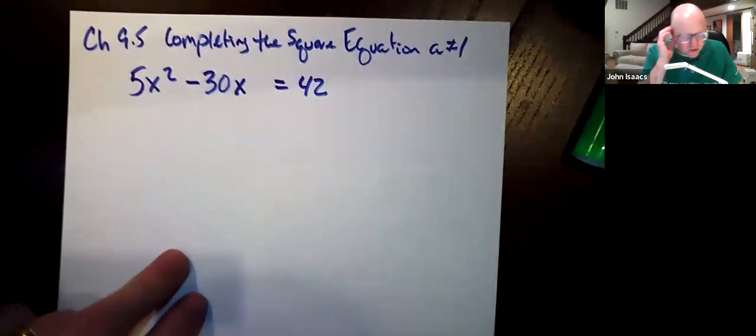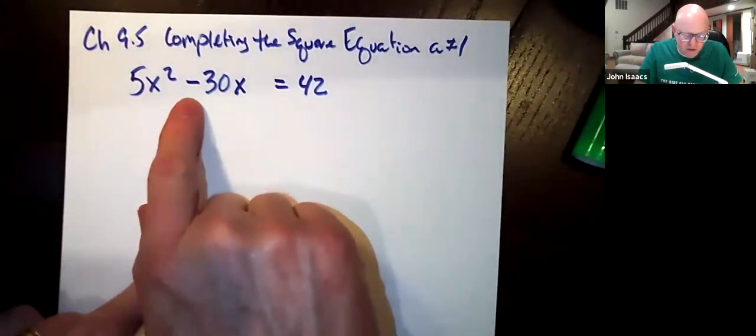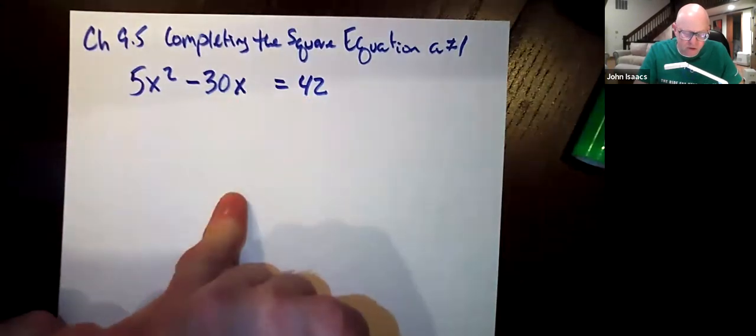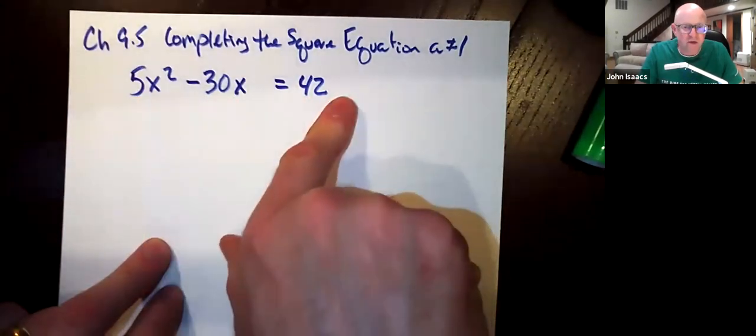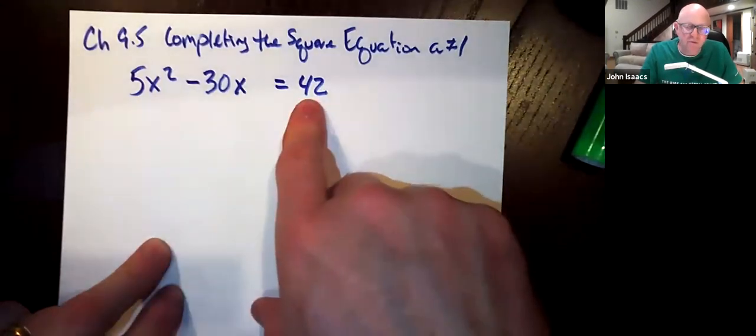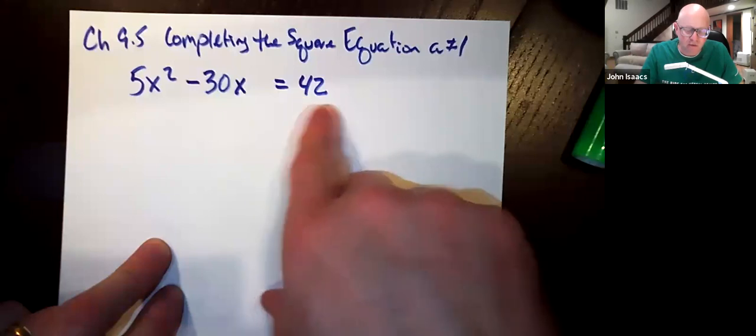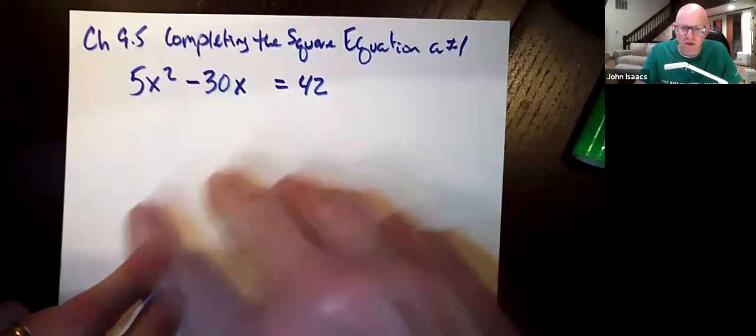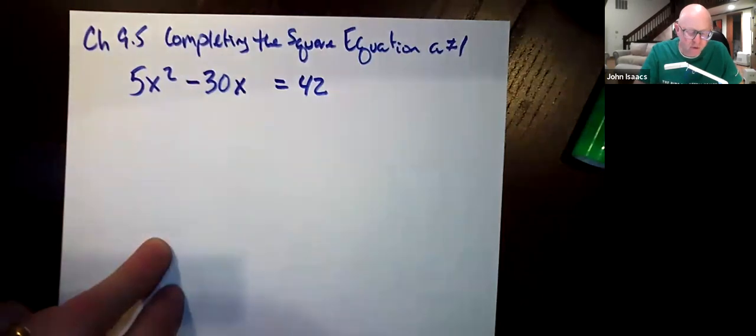So here we have an equation that says 5x squared minus 30x is equal to 42. It'd be nice if we could just divide 5 into everything, but we can't. This could have been y before, or it could have had a number and y if we were doing a graph, but here we just have a straightforward equation.